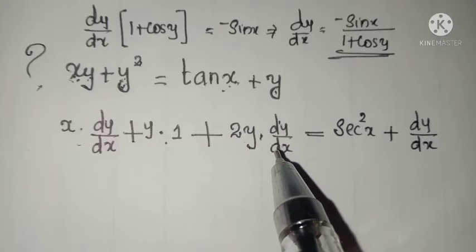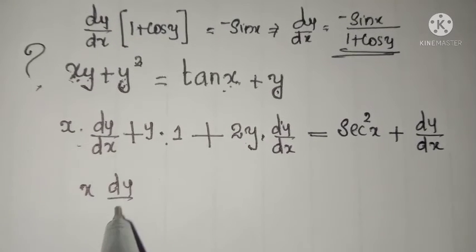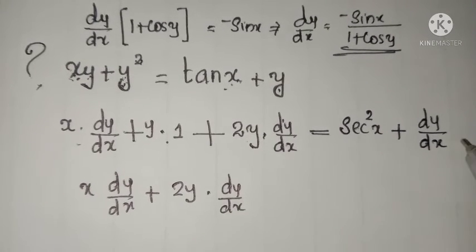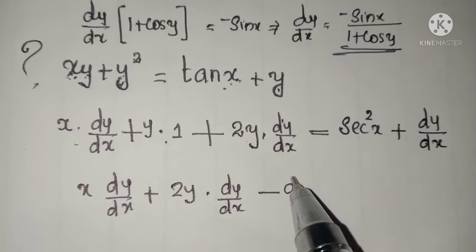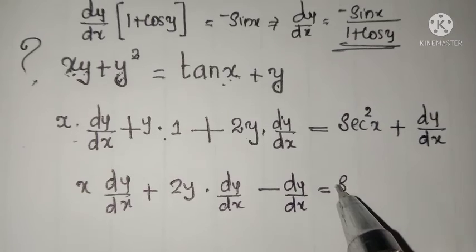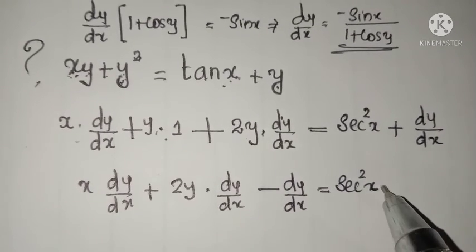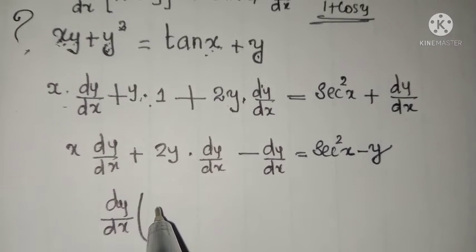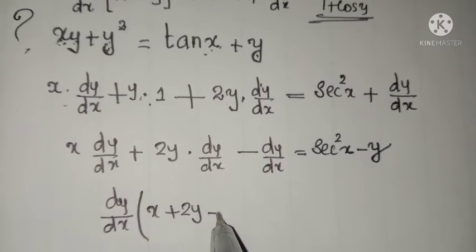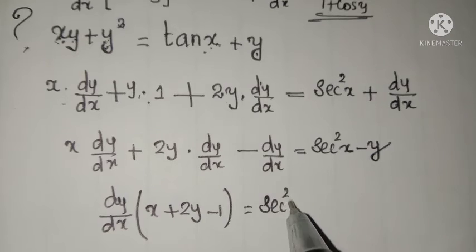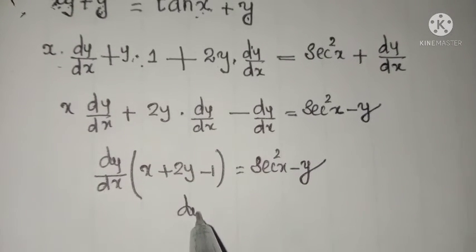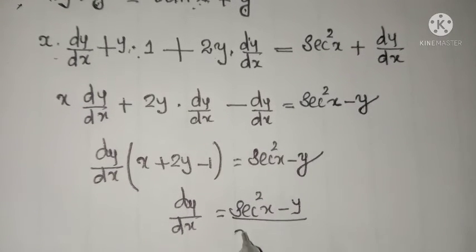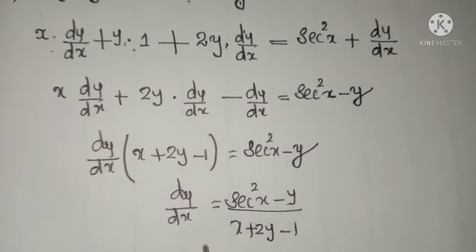Collect all the dy by dx terms together: x into dy by dx plus 2y into dy by dx minus dy by dx equals sec squared x. Take the remaining term to the other side: minus y. Taking dy by dx common: dy by dx into x plus 2y minus 1 equals sec squared x minus y, so dy by dx equals sec squared x minus y divided by x plus 2y minus 1.